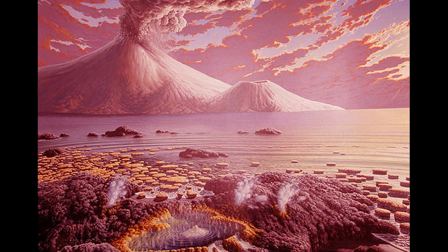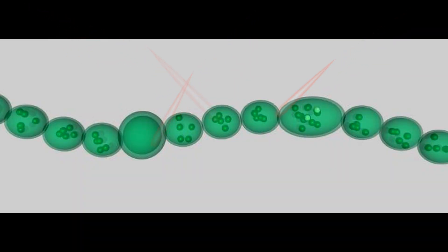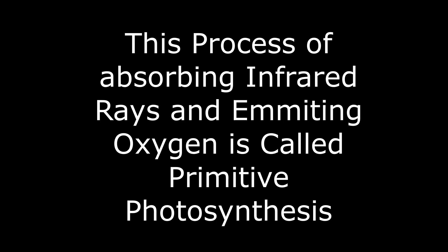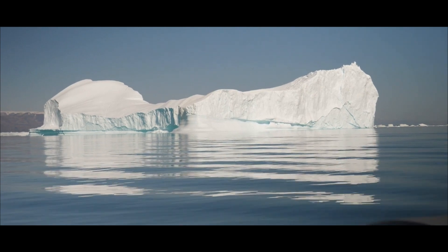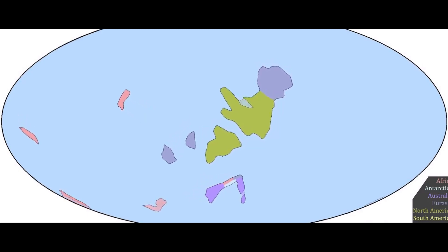Approximately 2.7 billion years ago, unicellular organisms called cyanobacteria appeared on the Earth. Surprisingly, cyanobacteria started absorbing infrared light instead of visible light and started emitting oxygen into the air. This process of absorbing infrared light and emitting oxygen was called primitive photosynthesis. This oxygen emitted by the cyanobacteria removed greenhouse gases like methane that kept the planet warm. As a result, the Earth's temperature reduced by 5 degrees compared to what it is today, significantly cooling the Earth.